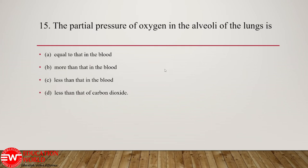Question number 15: the partial pressure of oxygen in the alveoli of the lungs is primarily more than that in the blood. The partial pressure of oxygen in the alveolar air is 104 mmHg, whereas it is 40 mmHg in deoxygenated blood and 95 mmHg in oxygenated blood. Hence the partial pressure of oxygen in the alveolar lungs is more than that in the blood.